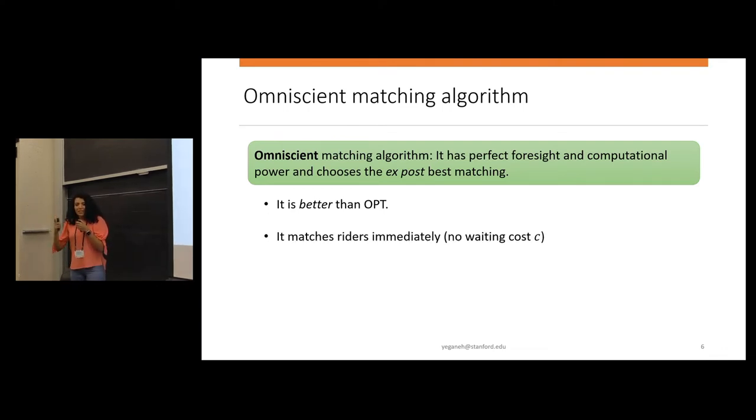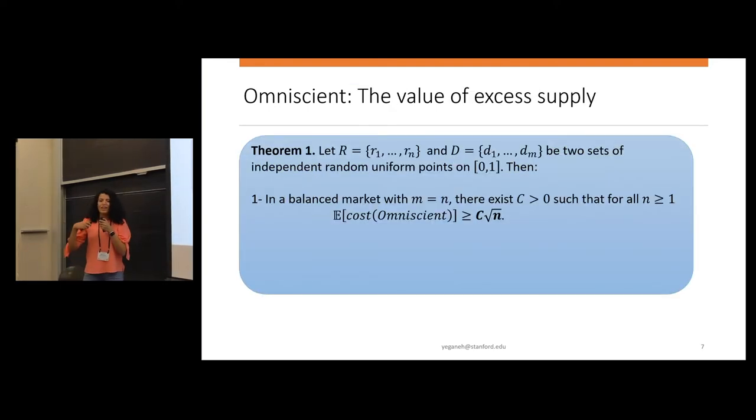A few notes about this omniscient algorithm. It's of course better than optimal because of this perfect foresight. But it matches riders immediately. When a rider arrives, I know about the future so I don't have to wait. So the waiting cost doesn't matter for the omniscient. And it's also detail-free in other senses. For example, riders could depart with some model, but it also doesn't matter for the omniscient.